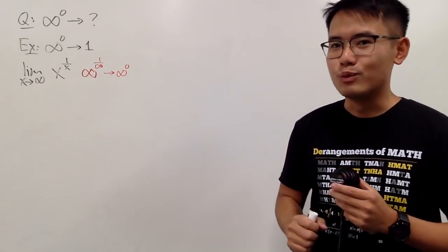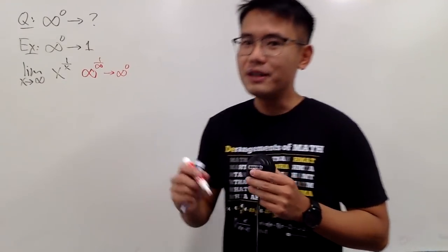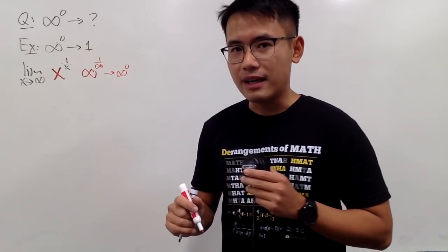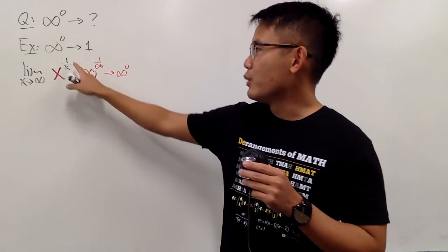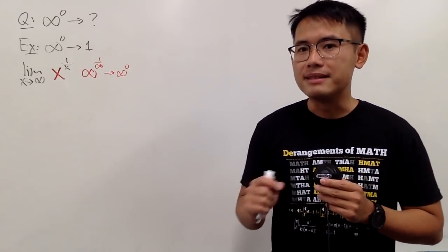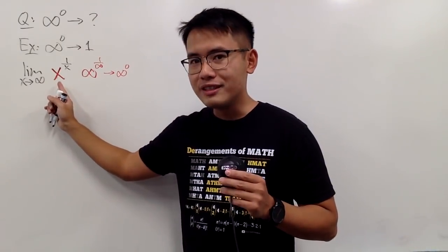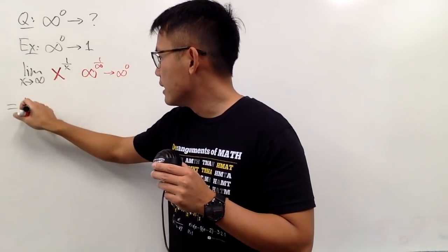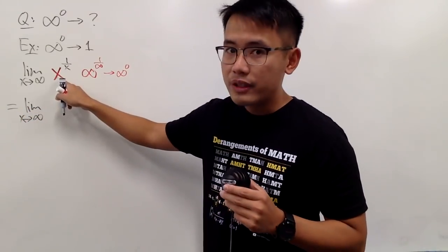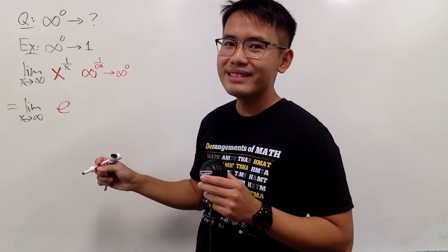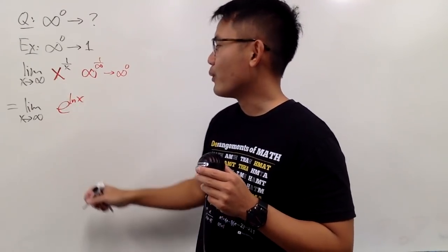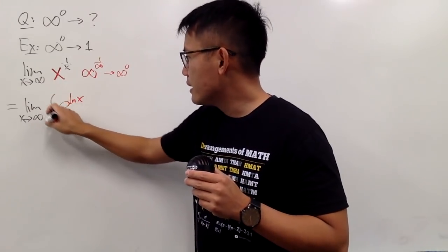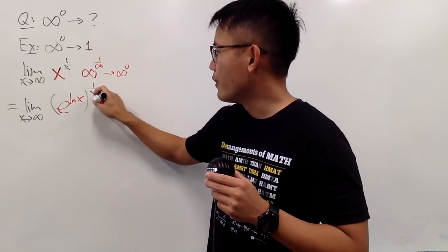Here are the steps I'll take. I'll focus on the base x. We don't like to work with base x, especially when the exponent is also another function — we prefer base e. One way to deal with this is to write x as e to the ln x power. So we look at the limit as x approaches infinity, and replace x with e to the ln x, then raise that to the 1 over x power.